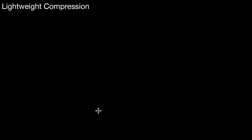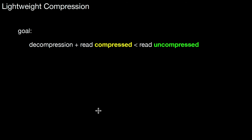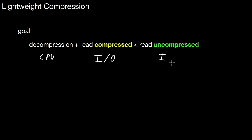What we will be talking about is called lightweight compression. Lightweight has the goal that decompression costs (CPU costs) plus the costs for reading the compressed data — some form of I/O, whether from disk, main memory, or network — should be smaller than reading the uncompressed data. In processes where I/O is a bottleneck, you can think about this equation and exploit it.